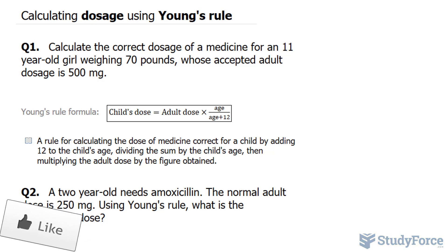We're told that this girl is 11 years old, so her age is 11, and the adult dosage is 500 milligrams. I'll represent that as AD is 500 mg. Let's apply those numbers into this formula. So we have the child's dose, CD,